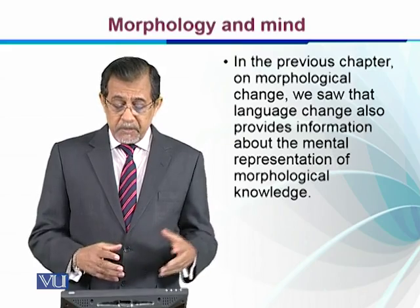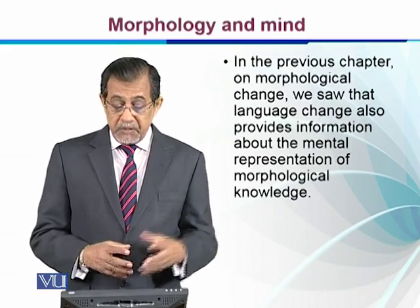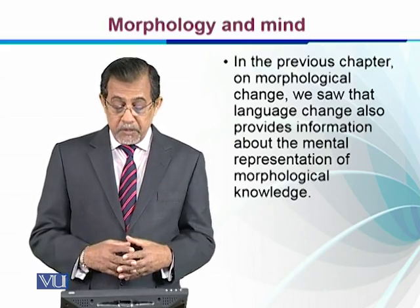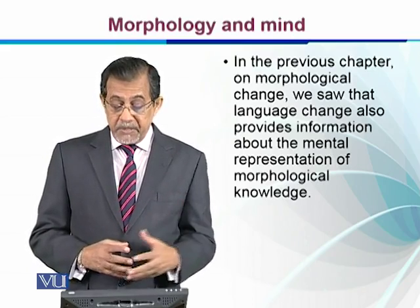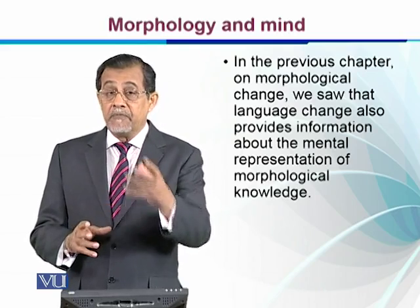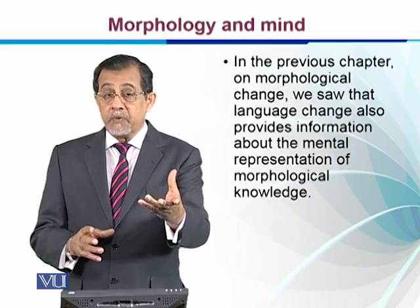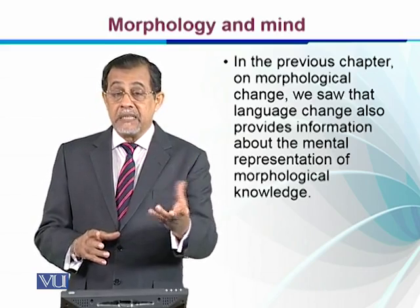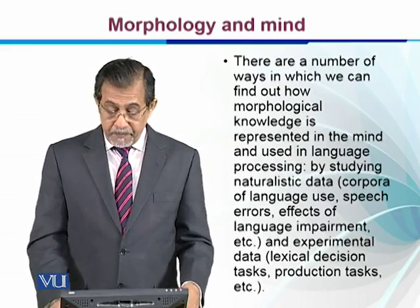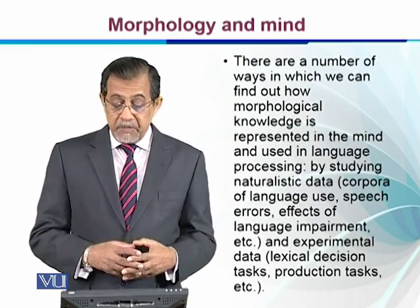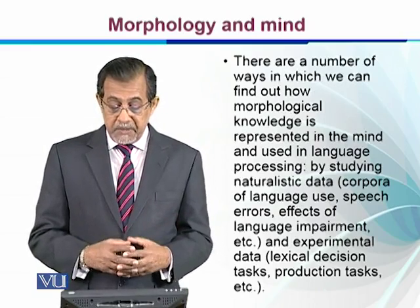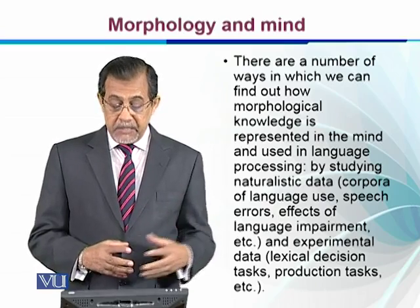This understanding of morphological aspects in our mind can help us understand how language is produced and recognized. In the previous chapters on morphological change, we saw that language change also provides information about the mental representation of morphological knowledge — how we make causative sentences, passive sentences, anti-passive, and other structures. There are a number of ways in which we can find out how morphological knowledge is represented in the mind and used in language processing.